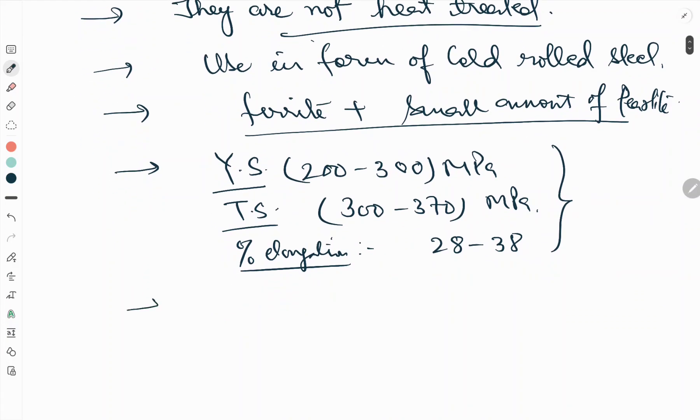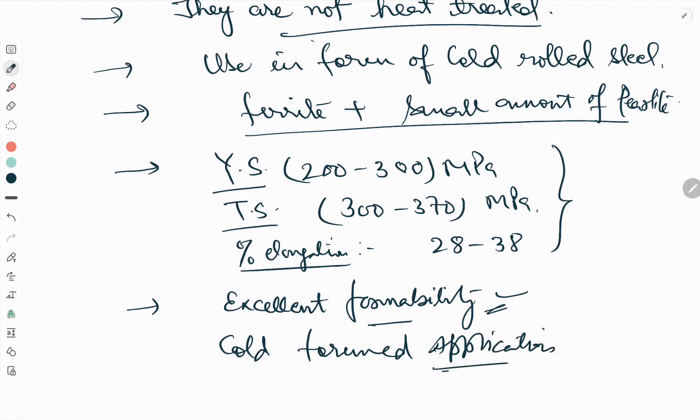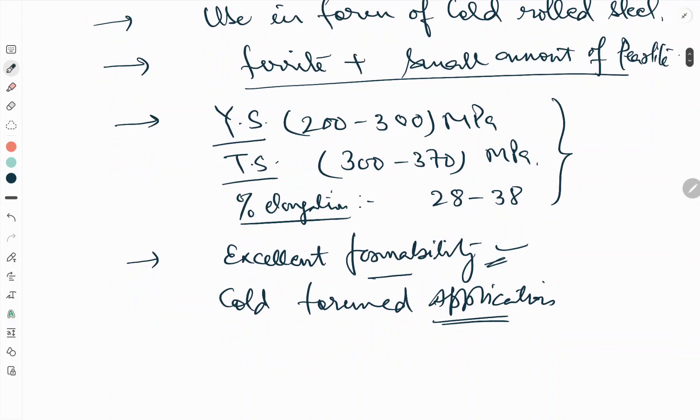They show excellent formability. Due to excellent formability, this property makes them suitable for cold forming processes or cold formed applications such as stamping of automobiles and refrigerator bodies, tin cans.